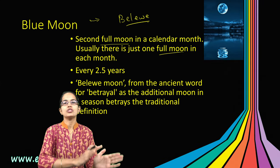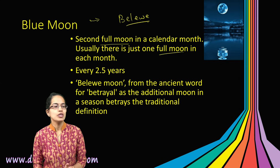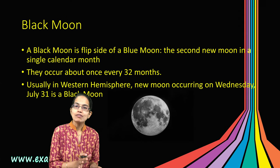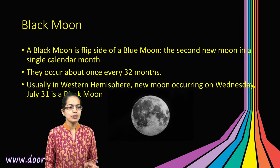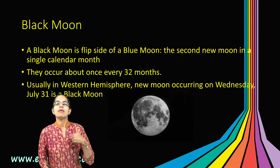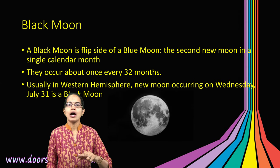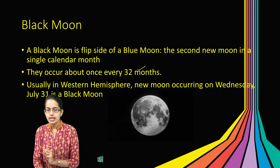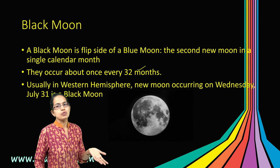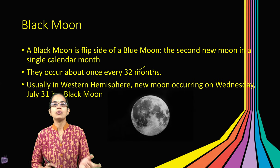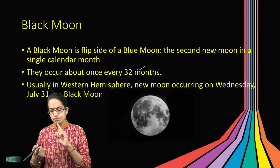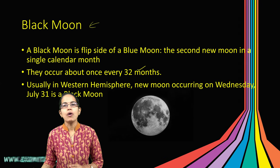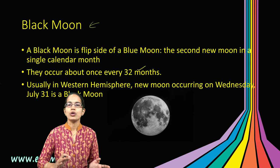The reverse of blue moon is black moon. While blue moon is a second full moon in a calendar month, black moon is a second new moon in a calendar month. Usually you have just one new moon, but in certain cases a second new moon occurs — every 32 months this phenomenon is seen. In the western hemisphere, generally it is on 31st July where this extra second new moon is seen. So black moon is essentially the inverse of blue moon.